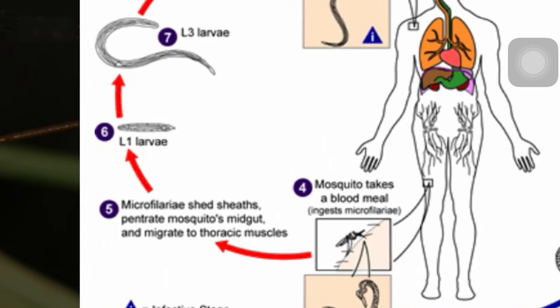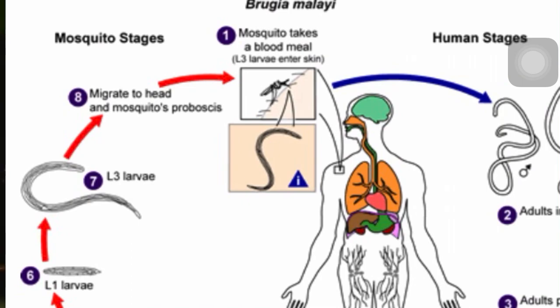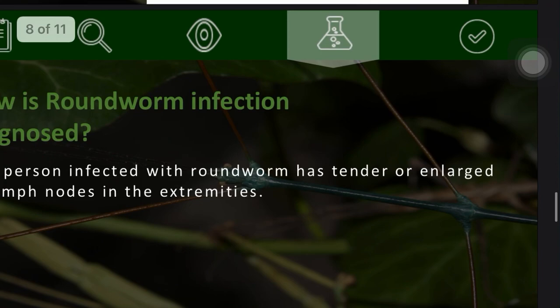The microfilariae penetrate the mosquito's midgut and migrate to the thoracic muscles, where they form L1 larvae and then L3 larvae. The L3 larvae then migrate to the head and proboscis of the mosquito, completing the cycle when the mosquito takes a blood meal and injects the larvae into human skin.